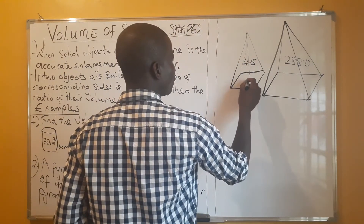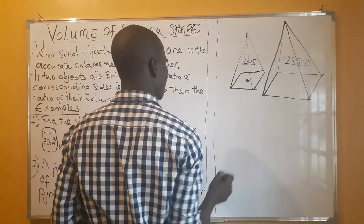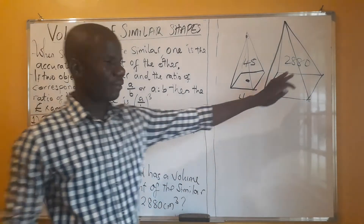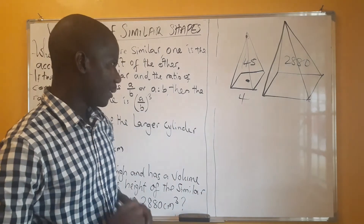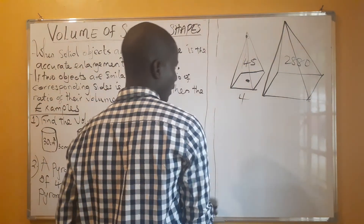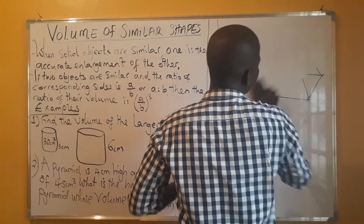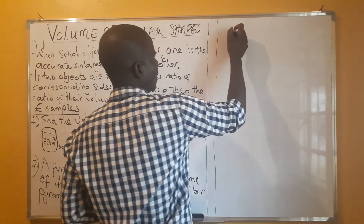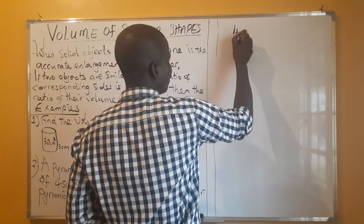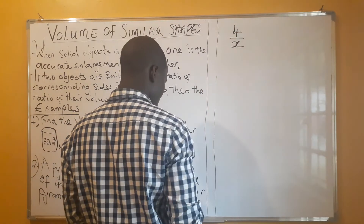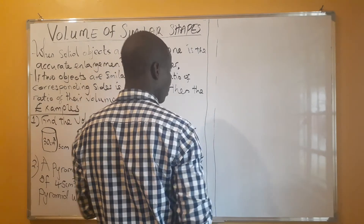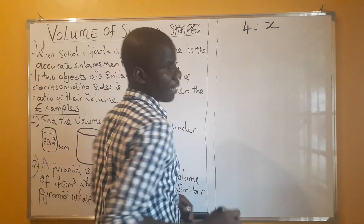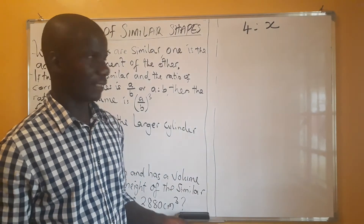The height of the smaller pyramid is given as 4, going from the base point up to the apex, and the height of the larger pyramid we do not have. We want to find that height. So we have the heights as 4 to x, where x is unknown.